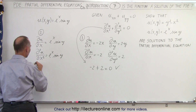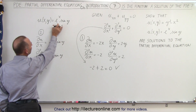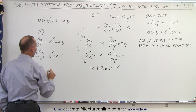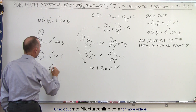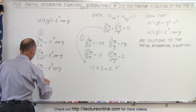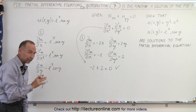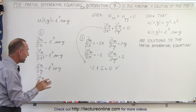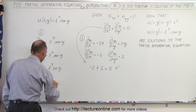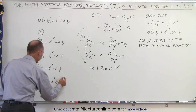Now we take the partial derivative of the function with respect to y. It's a little different because e to the x is now a constant, and the derivative of the sine of y is the cosine of y. So that gives us e to the x times the cosine of y. Then if we take the second partial derivative of u with respect to y, the derivative of cosine of y is negative sine, and e to the x remains constant. So that gives us minus e to the x times the sine of y.